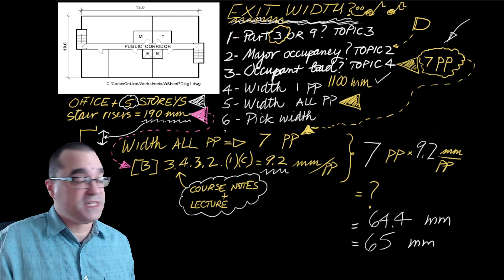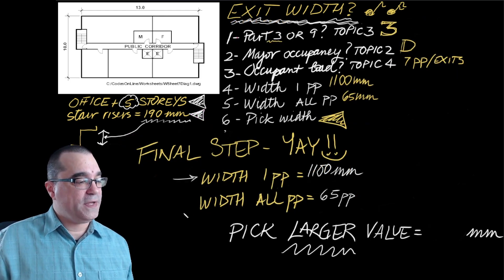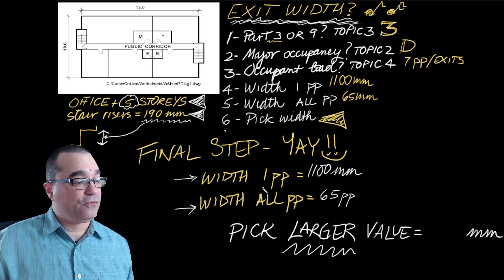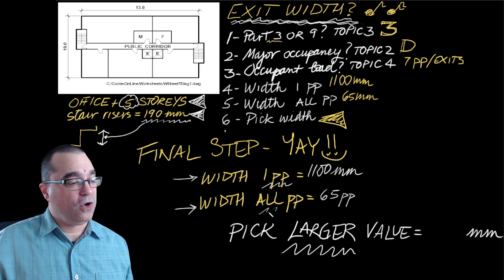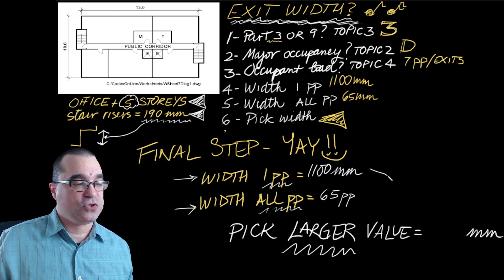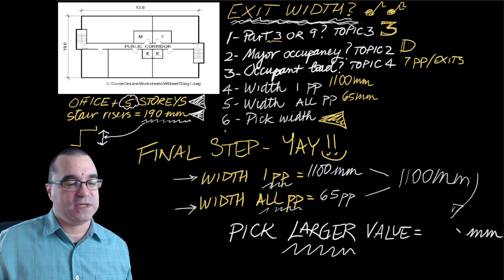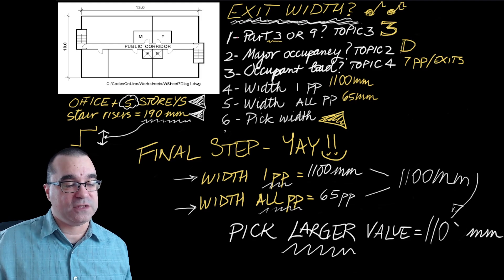Under step number six, we identify the two widths that we calculated, the one for one person, the one for all people, and we have to pick the larger one of the two values. So between these two, which one is the larger one? It's 1,100 millimeters, which is actually going to be our final answer.